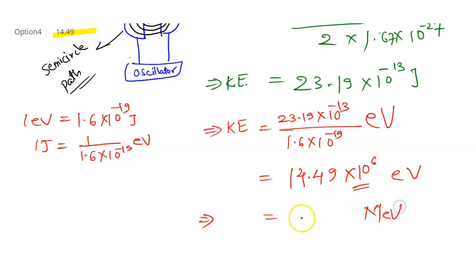Mega will be electron voltage. So the answer for kinetic energy is 14.49 into 10 to the power - sorry - 14.49 mega electron voltage. So what is our answer?